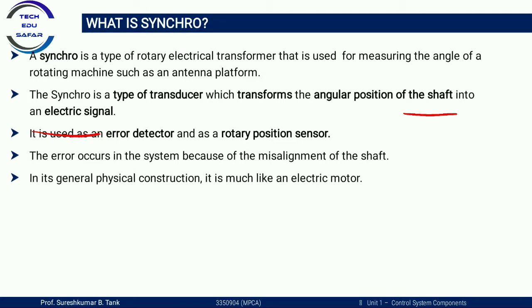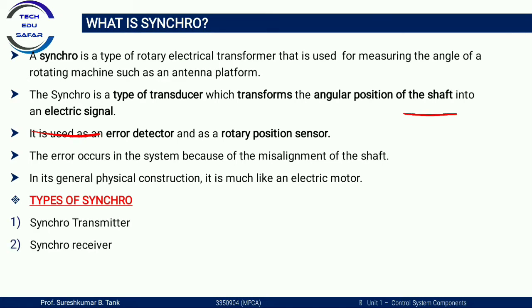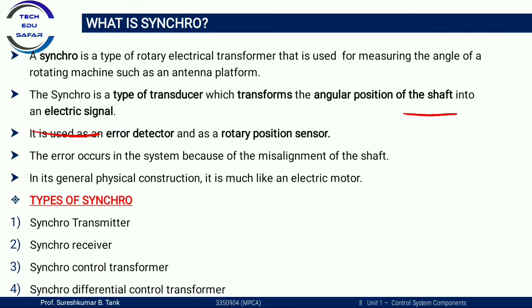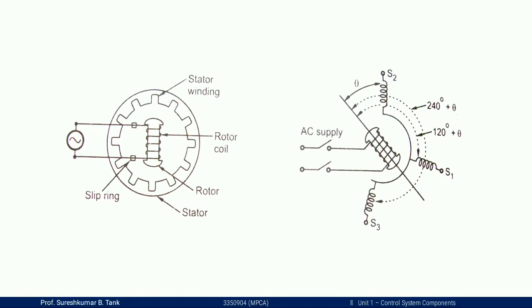In general physical construction, a synchro is much like an electrical motor. The different types of synchros available are: synchro transmitter, synchro receiver, synchro control transformer, and synchro differential control transformer. These are the four main types available in the market, and all devices share the same general simple construction.